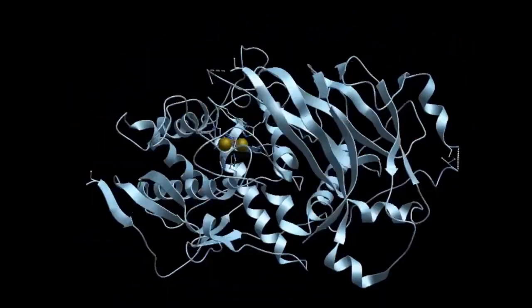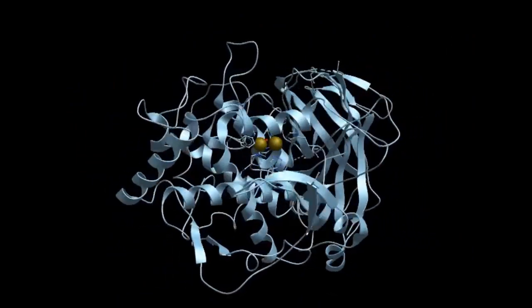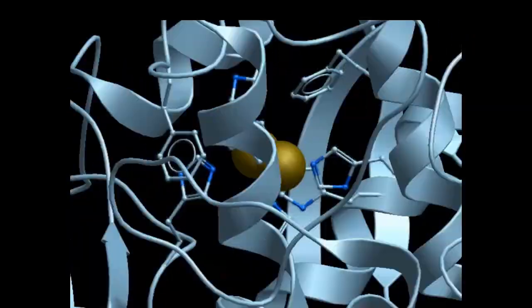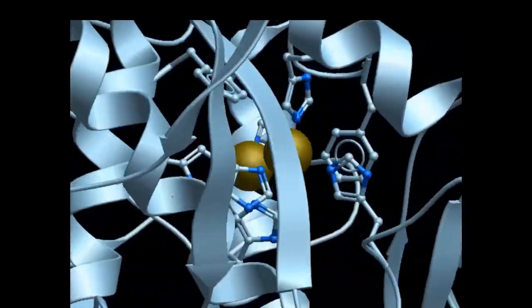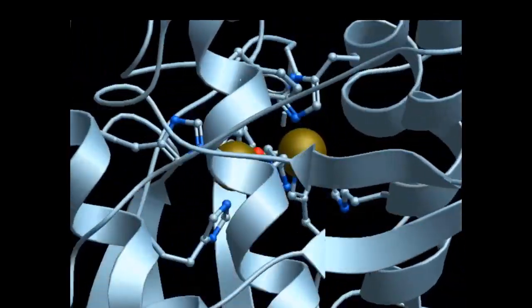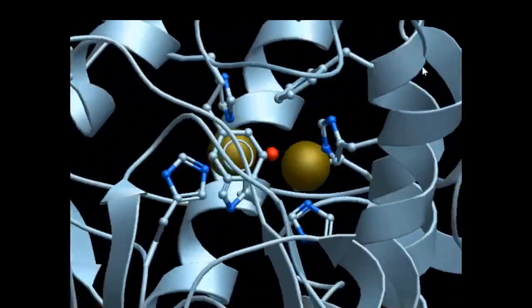Next, we zoom into the active site. The two copper ions displayed as these yellowish spheres. They are surrounded by histidine with the one-letter code H, and you have some phenylalanine rings around.